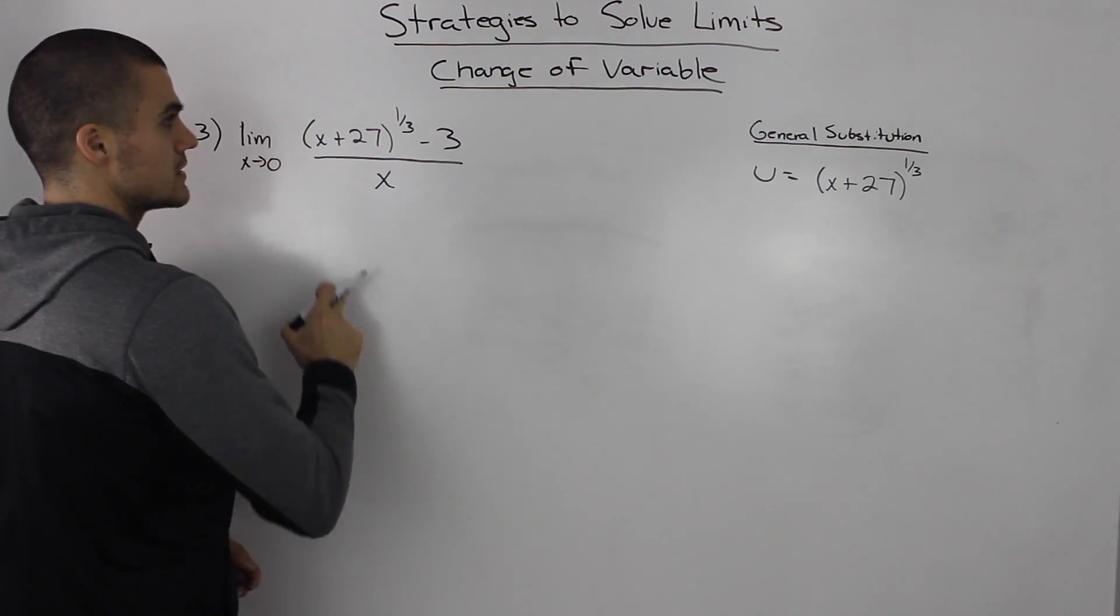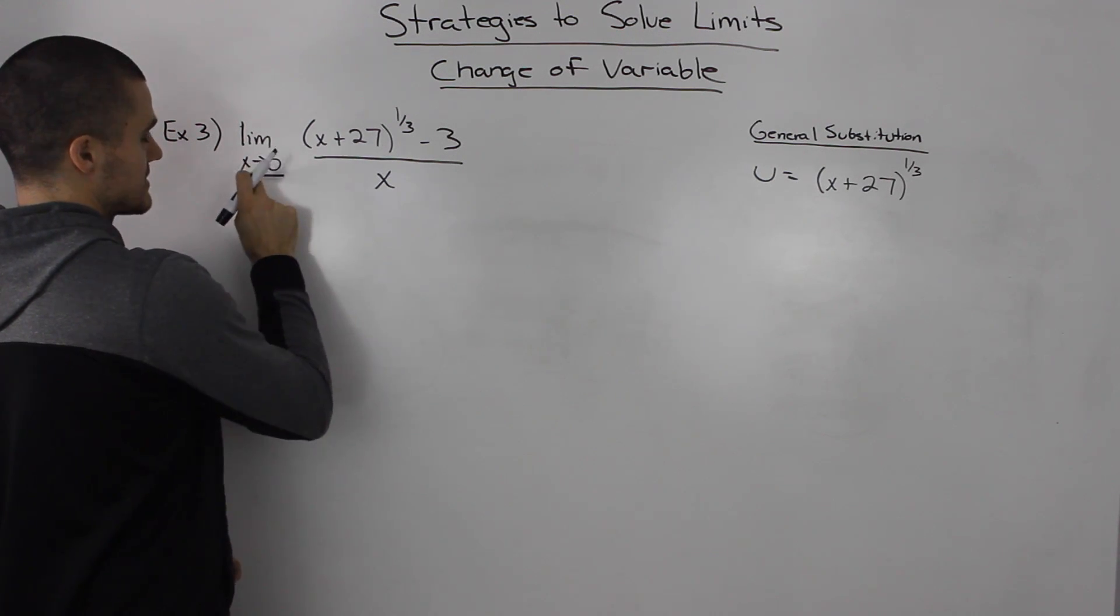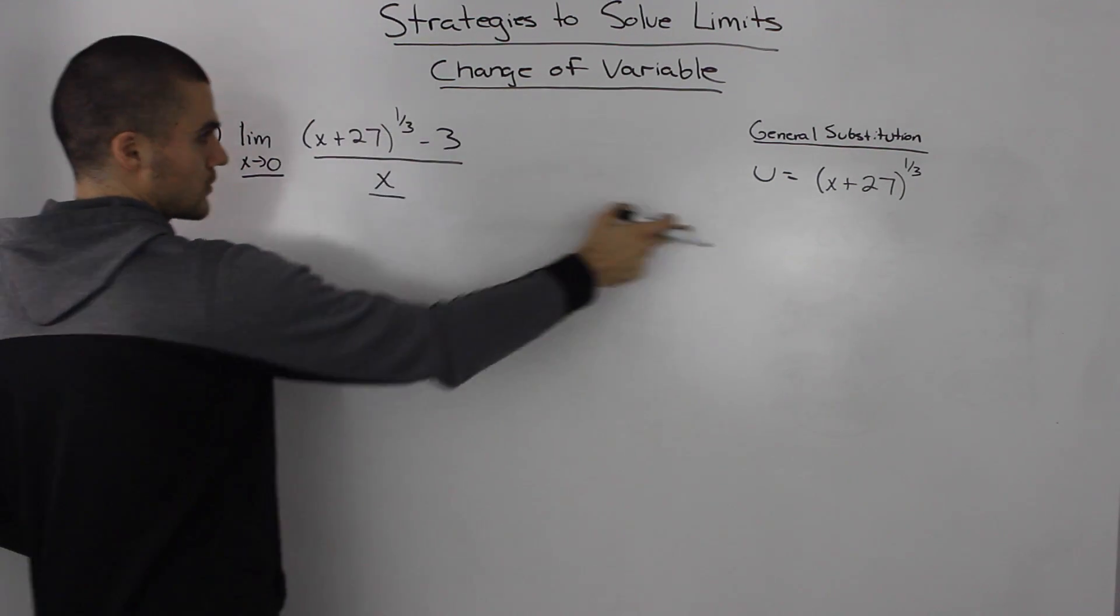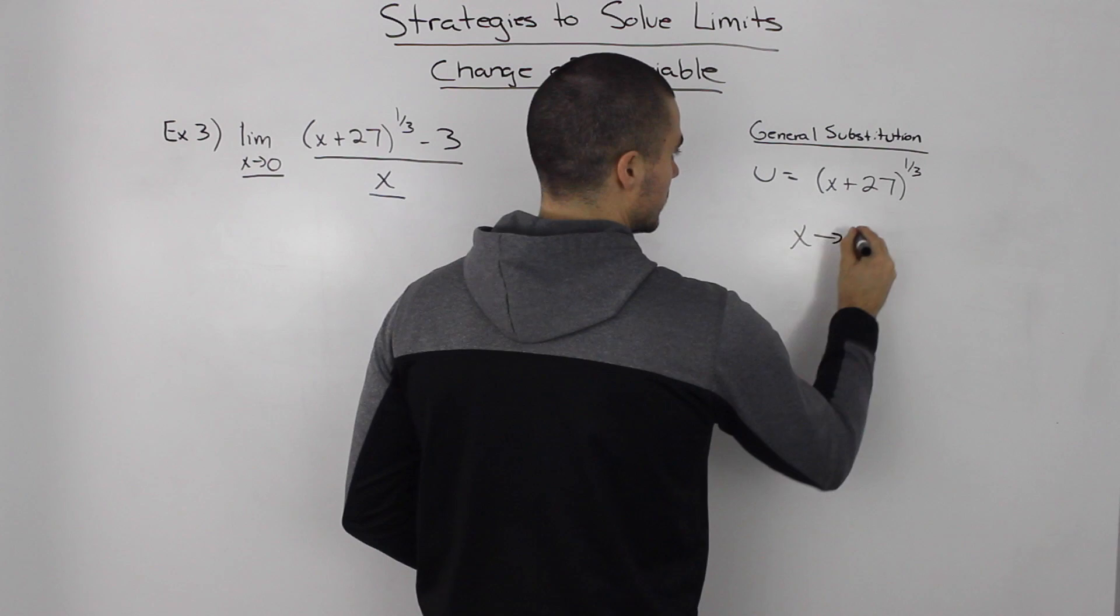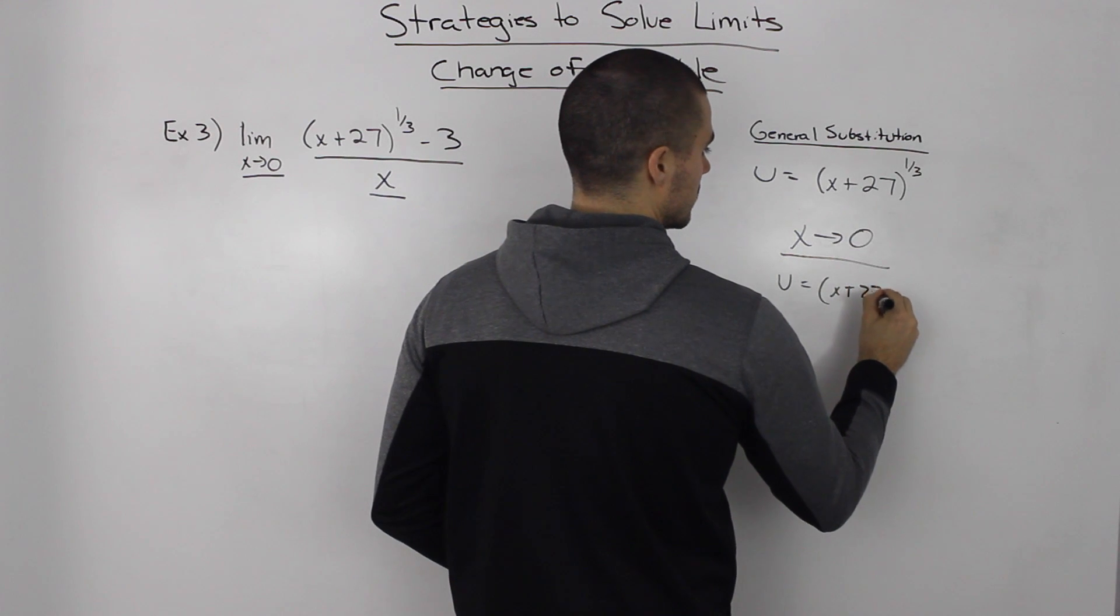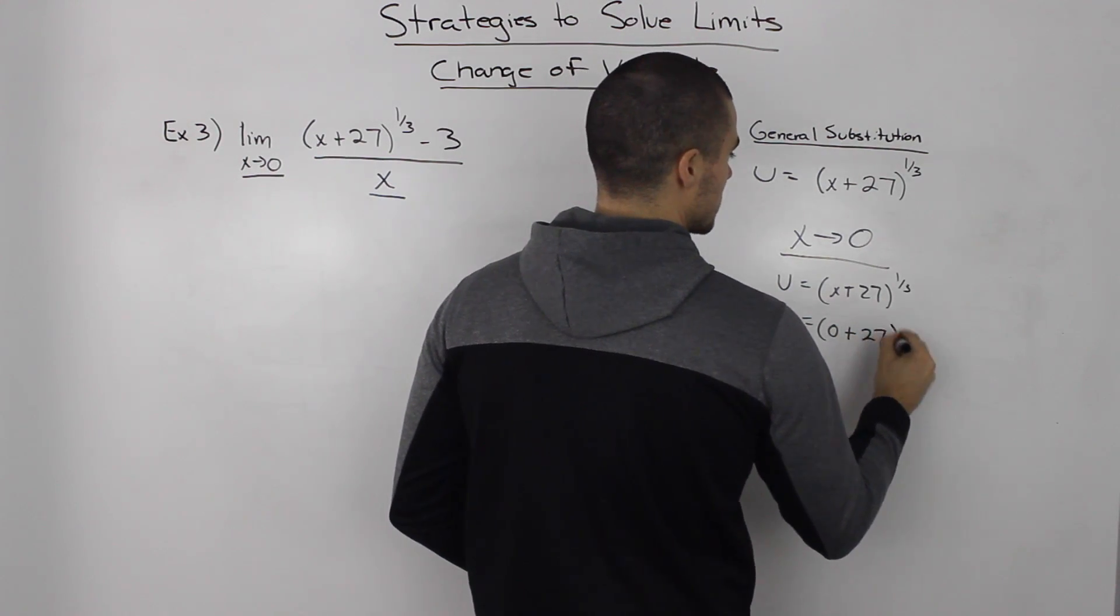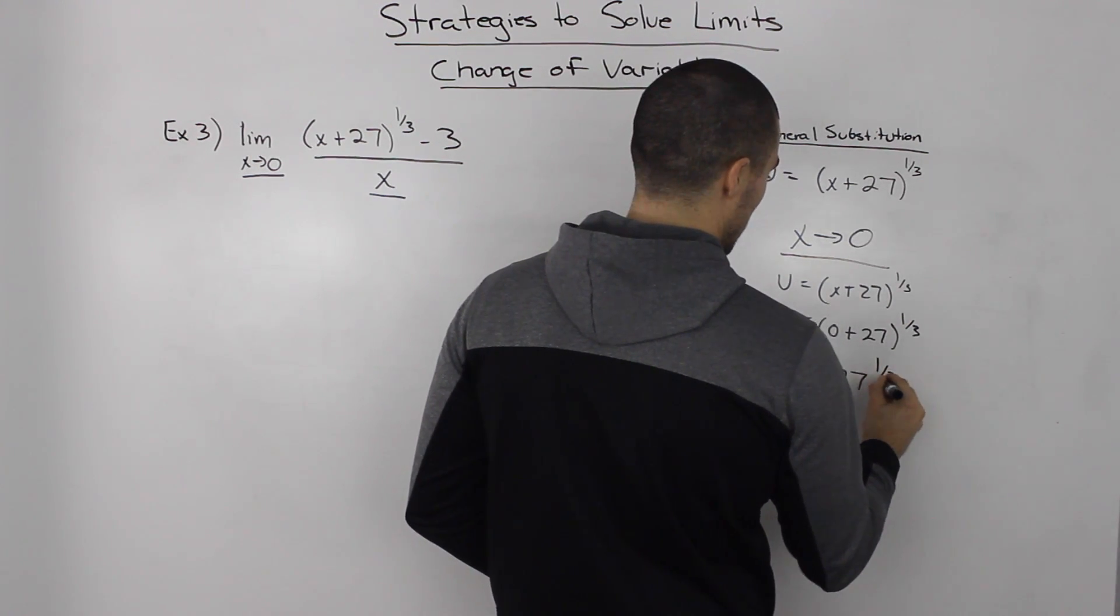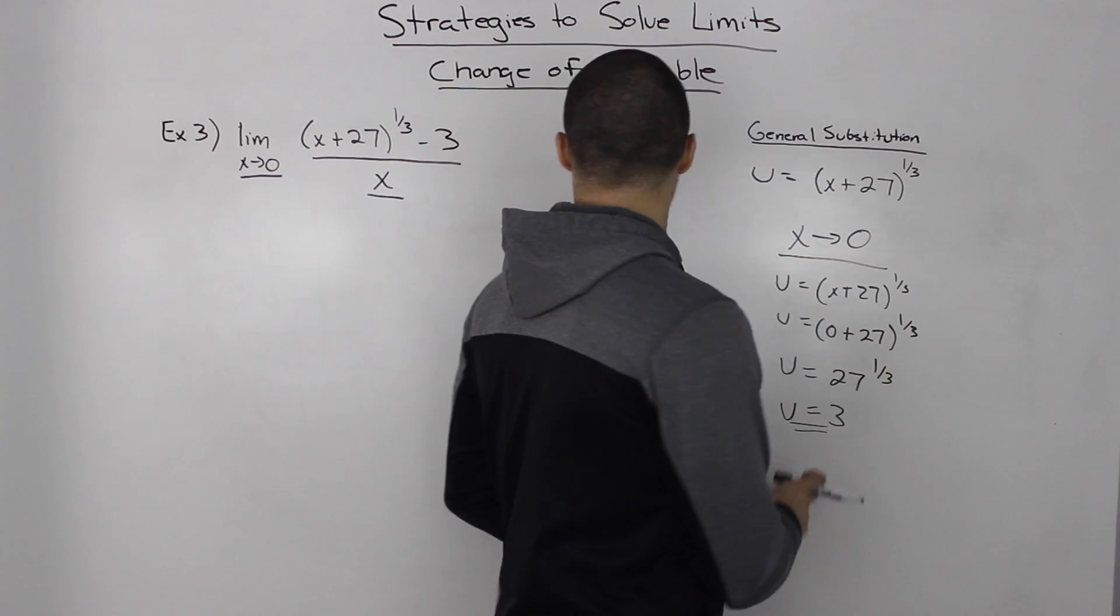Now we need to make a substitution for as x goes to zero, for x by itself, and for (x+27)^(1/3), which we already did. So let's find an equivalent expression for as x approaches zero. We take our general substitution and substitute zero for x. We'll have (0+27)^(1/3), which is 27^(1/3). So u equals 3.